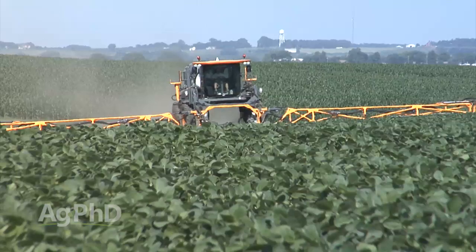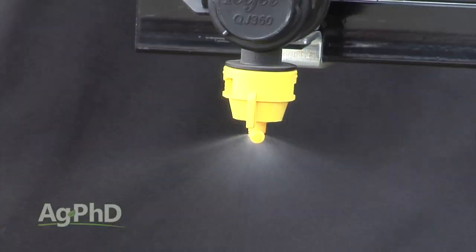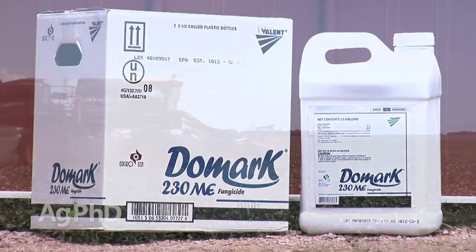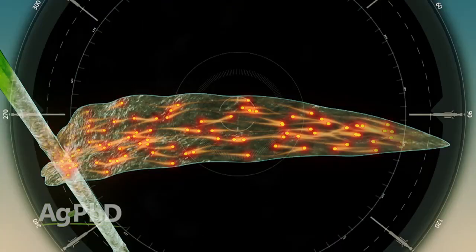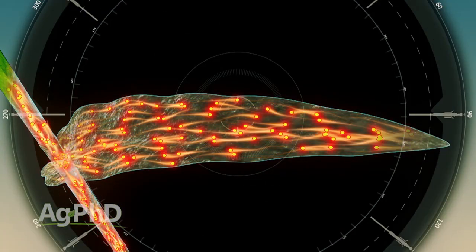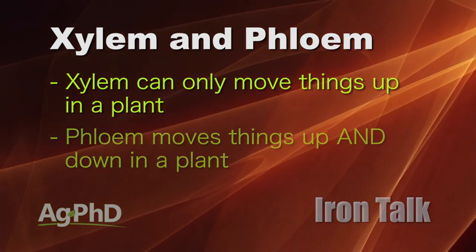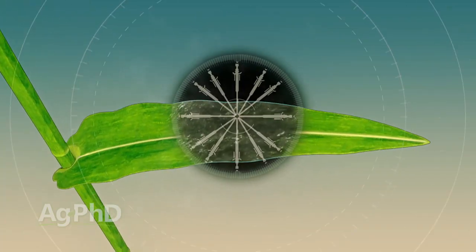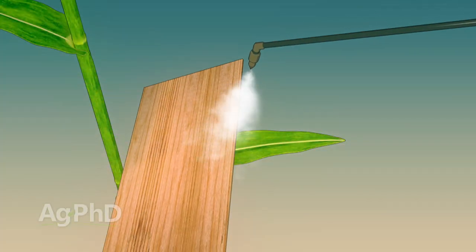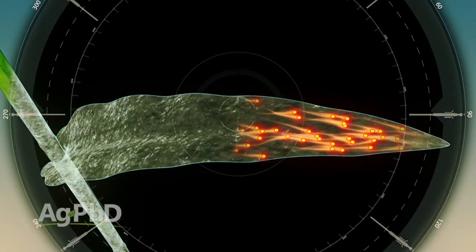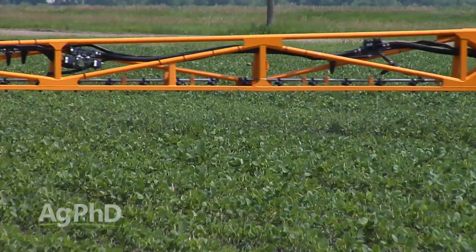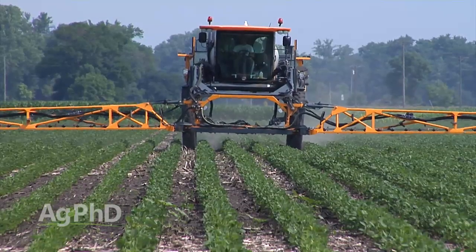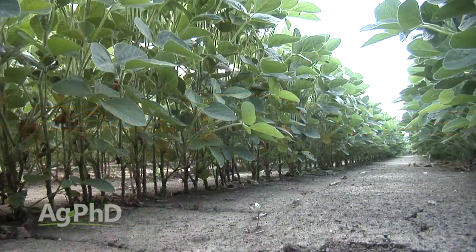Having the right equipment is critical to achieve the best performance from your fungicide applications. With fungicides, you have to understand how they work to set up your sprayer to optimize performance. There are two transport systems in the plant — the xylem and the phloem. The xylem can only move things up in the plant; the phloem moves nutrients and water both up and down. Fungicides, once inside the plant, only move in the xylem. Also important: fungicides can only protect the leaves and plant parts that are out at time of application.